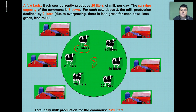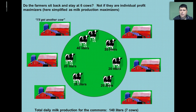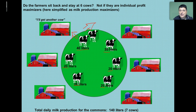So when we start off with six cows, the total amount of milk being produced in this pasture will be 120 liters. Now, would the farmers sit back and stay at six cows? Unlikely — not if they wanted to maximize their individual profits. So it's inevitable that at least one of the farms would purchase another cow, increasing their milk output and allowing for more milk for themselves and perhaps milk to sell. This does not necessarily negatively impact the production of the other farmers, but they're certainly going to be a little envious of this initial farm's newfound wealth.